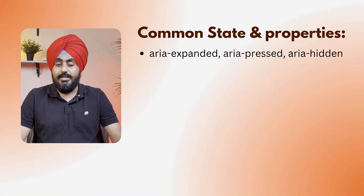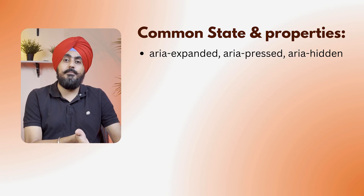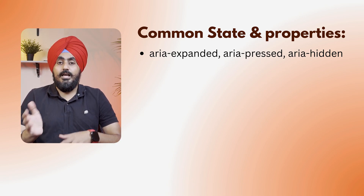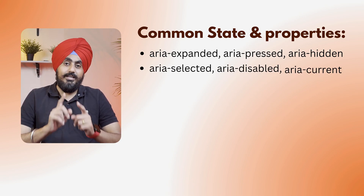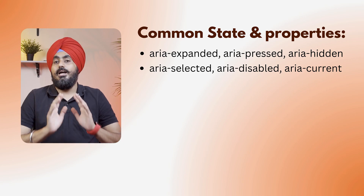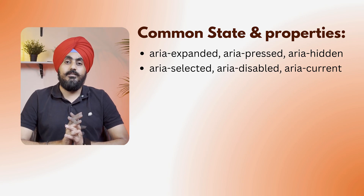Next, we have state and property attributes to express dynamic behaviors. These include aria-expanded, aria-pressed, aria-hidden, aria-selected, aria-disabled, and aria-current — the most commonly used attributes. Use these to keep users informed about what's interactive or active.